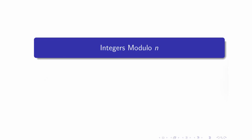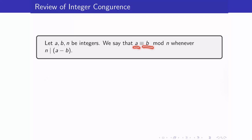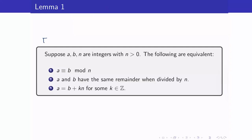Before we proceed, let us first recall the definition of modulo n. Two integers are said to be congruent modulo n whenever n divides a minus b. It is an exercise to show that the following are equivalent: a is congruent to b modulo n if and only if a and b have the same remainder when divided by n, and we can also write a equals b plus a multiple of n.